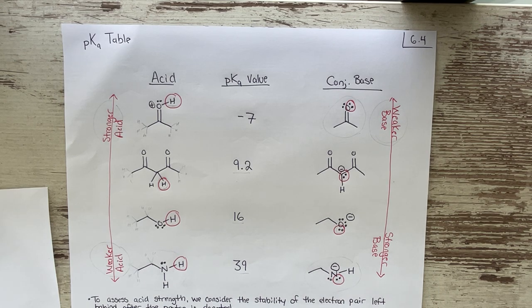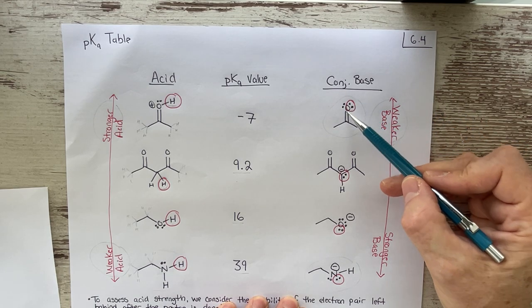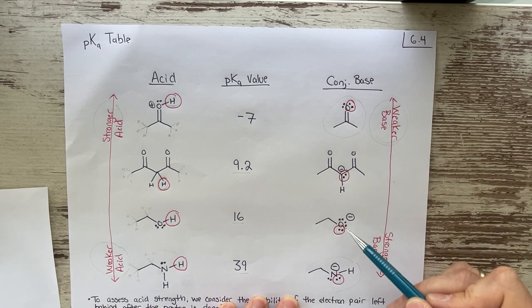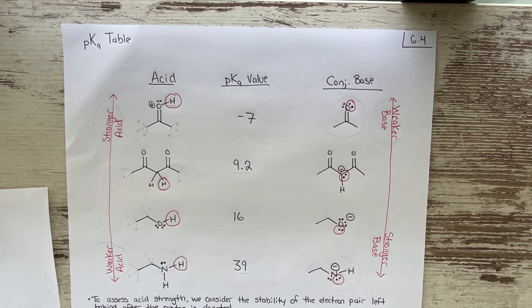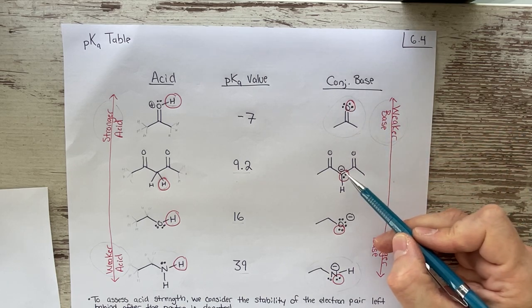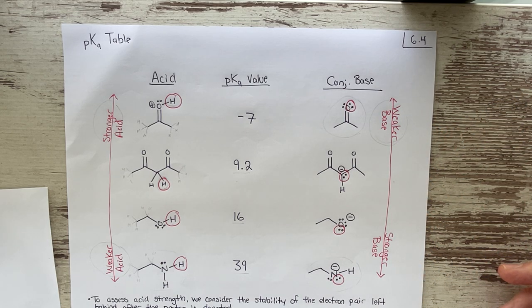In the next lecture, we'll take a look at the specific factors that govern the stability of a conjugate base. None of them should be surprising — we've already gone over many factors that help stabilize electron pairs. Until then, think about some of the factors that would make some of these conjugate bases more stable and some less stable, and see what you can come up with.